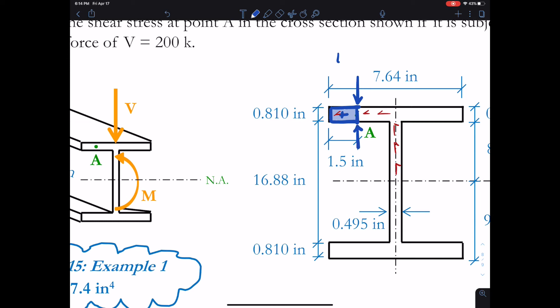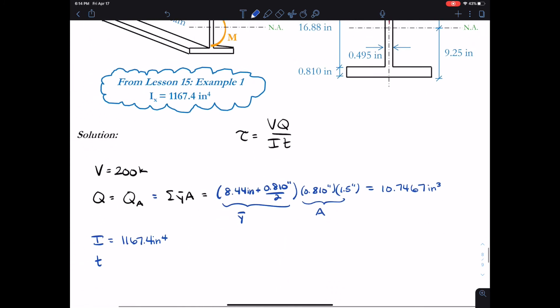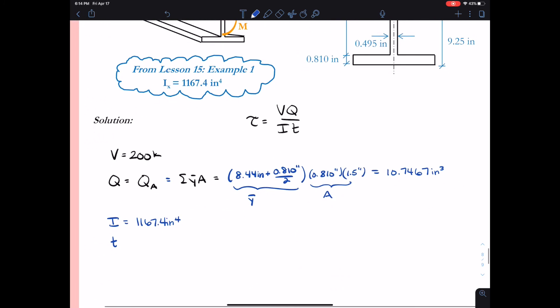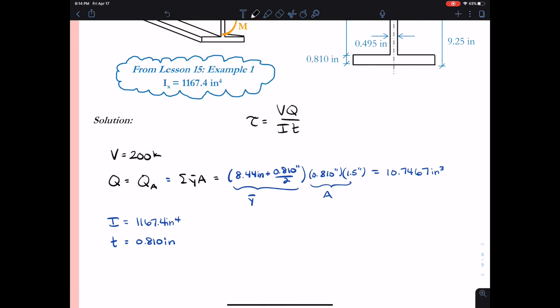Finally at my point of interest at point A, my thickness has to be the thickness across that thin plate which is 0.810 inches. So that'll be our value for our thickness. I've written in there the moment of inertia is 1167.4 inches to the fourth. You can go back a few lessons and take a look at the example on how we calculated that moment of inertia.